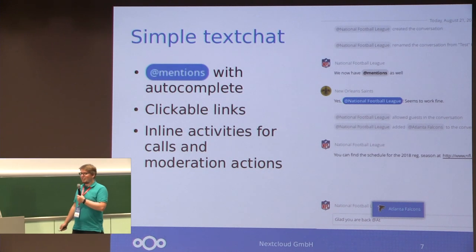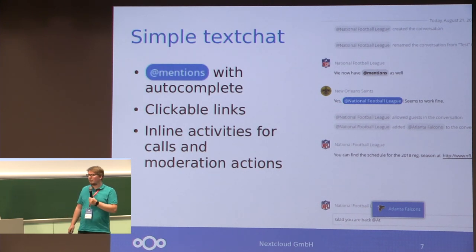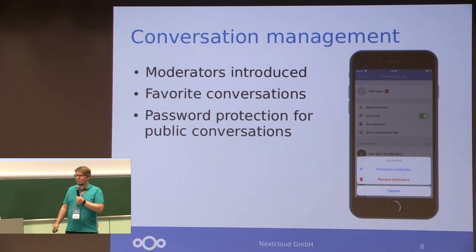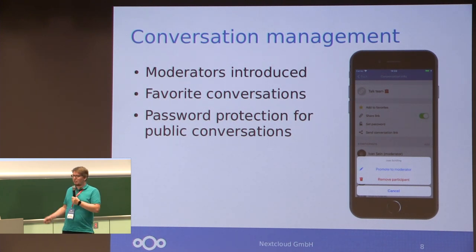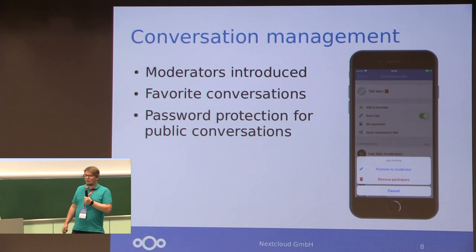The simple text chat is very simple at the moment — we have basic mentions, clickable links, and you can see inline activities for calls that happen, or when a user is added or removed to the call. We also improved the conversation management: you can now favorite conversations so they are added to the top of the list. We introduced moderators, so not everyone can add people to the call anymore. And you can now password protect your calls.